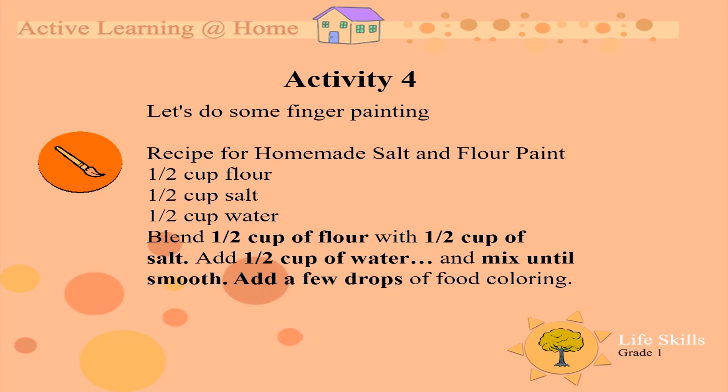Let's do some art. My art today is about finger painting. The recipe for homemade salt and flour paint is a half a cup of flour, a half a cup of salt and a half a cup of water. Blend the flour, salt and water and mix it together. You can add a little bit of food coloring to make the different colors. I'm sure by now you might know what the primary colors and the secondary colors are — if you don't know, it is good to go and look those up.